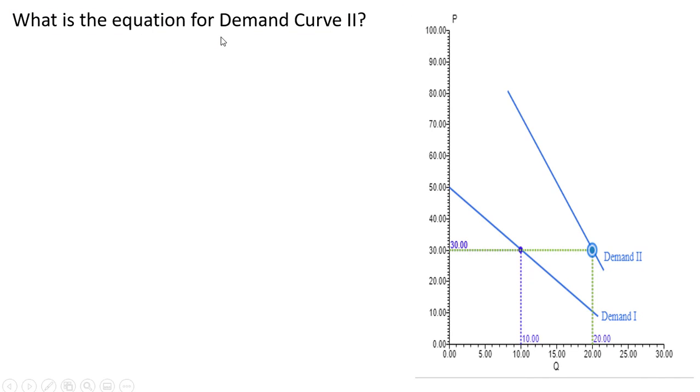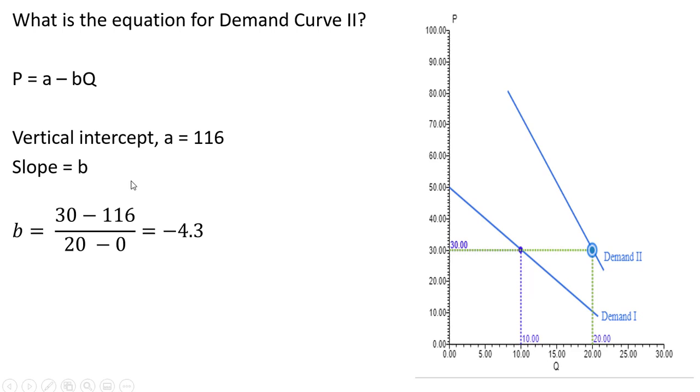What is the equation for this demand curve, this second demand curve? The equation for a linear demand curve is price equals the vertical intercept minus the slope of that demand curve times quantity. We know the vertical intercept is $116. We can solve for the slope here by doing rise over run.